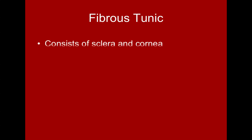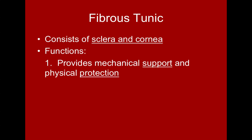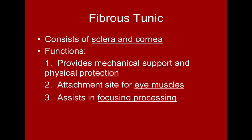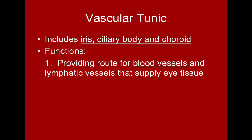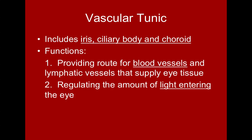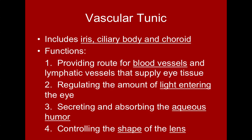The fibrous tunic consists of the sclera and the cornea taken together. It provides mechanical support and physical protection, serves as an attachment site for the eye muscles, and assists in focusing. The vascular tunic consists of the iris, ciliary body, and choroid. It provides a route for blood vessels and lymphatic vessels for nutrient supply and waste removal, helps regulate the amount of light entering the eye, helps secrete and absorb the aqueous humor, and controls the shape of the lens.